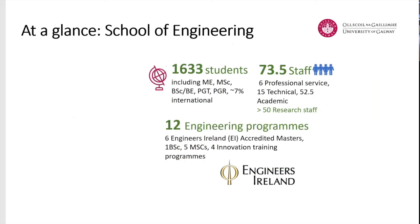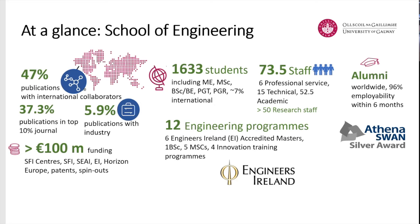The School of Engineering has about 74 staff — not huge. Sumit told me there are about 400 in the Warwick Manufacturing Group, which is quite amazing. We have about 1,600 students and 12 engineering programmes accredited by Engineers Ireland — the Irish equivalent of IMechE in the UK. We hold an Athena Swan Silver Award, with more than 35% of publications in the top 10% of journals, and a focus on international collaborations and industry engagement.